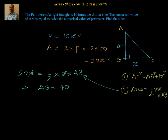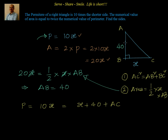To apply Pythagoras theorem we need all three sides. We have two sides so far. Going back to the input, perimeter equals 10x, which is also equal to x plus 40 plus AC. Since BC is x and AB is 40, we can solve: AC equals 9x minus 40.